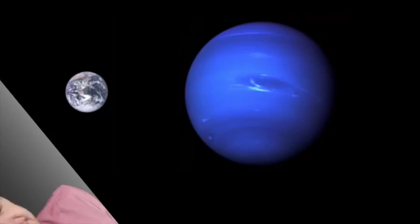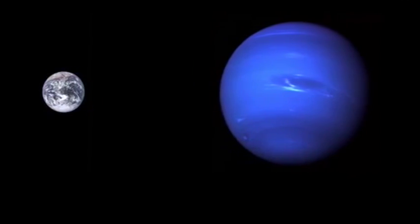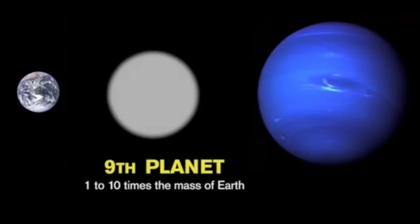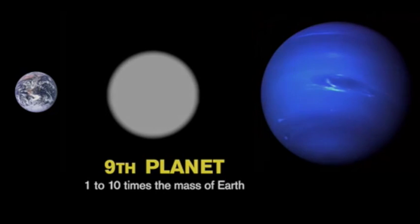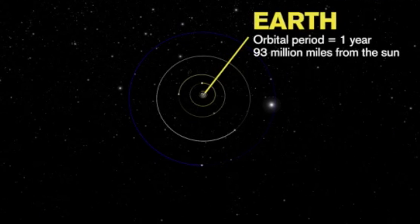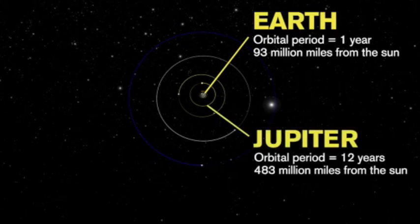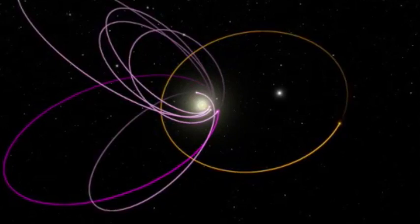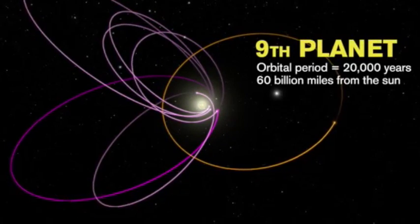However, for the math to work out, this planet would have to at least have 10 times the mass of Earth and orbit more than 250 times farther from the Sun, which makes this planet's orbit highly elliptical and will take approximately 15,000 to 20,000 years to complete its orbit.